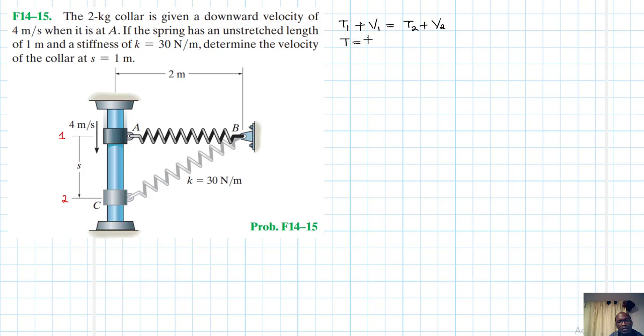So T here is just equal to half m v squared. And then we have V which is in two parts: gravitational as well as elastic.